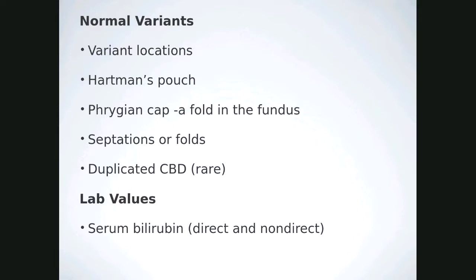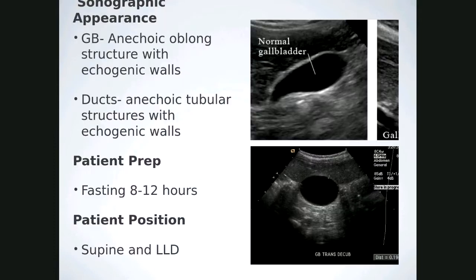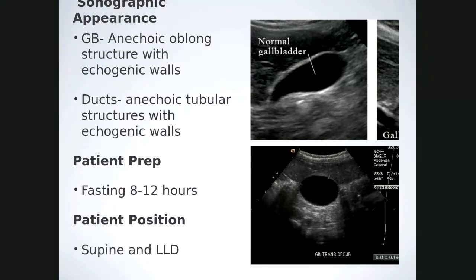Lab values pointing to the gallbladder include direct and non-direct bilirubin. Sonographically, the gallbladder is anechoic with echogenic walls; ducts are anechoic and tubular with echogenic walls. Patient prep is fasting — minimum 8 hours. For patient position, it's important to image in sagittal and transverse views supine, and then turn the patient to decubitus every time you evaluate the gallbladder. Document in your technical impressions that multiple sagittal and transverse images were obtained in supine and decubitus.